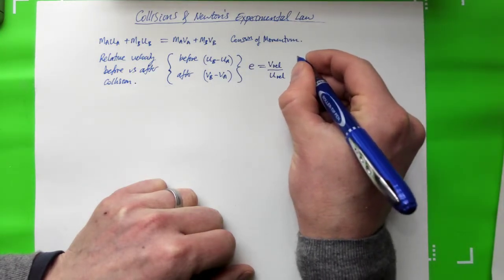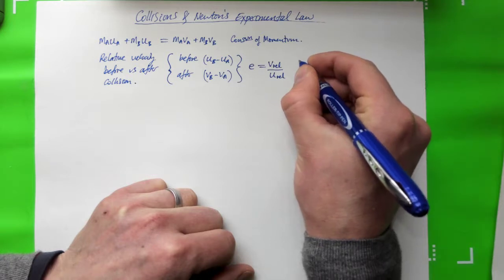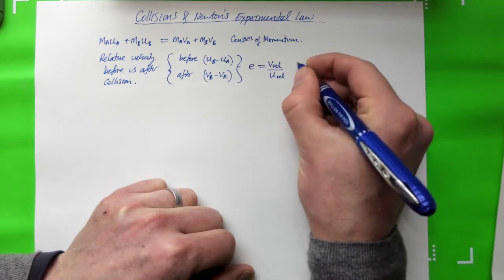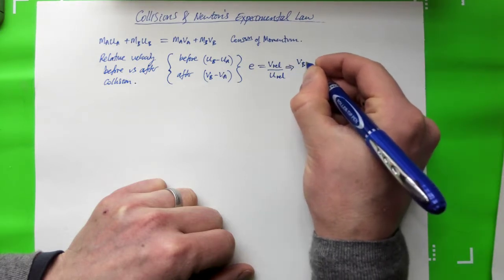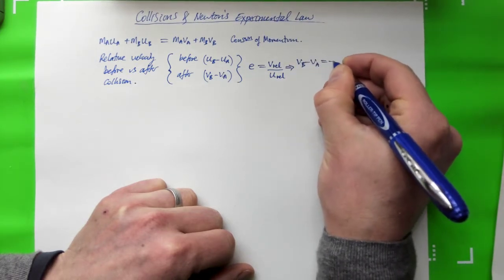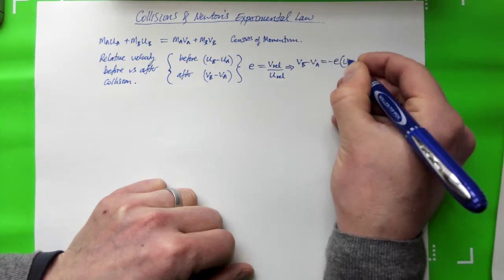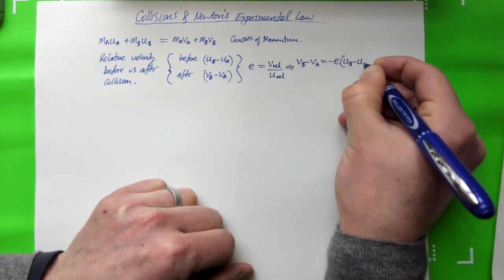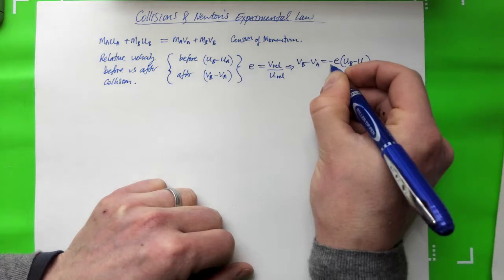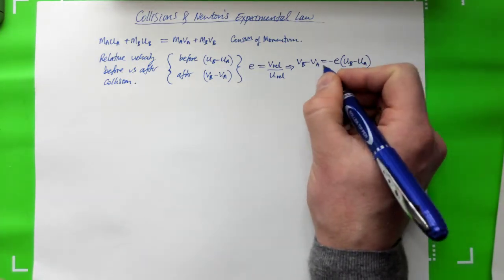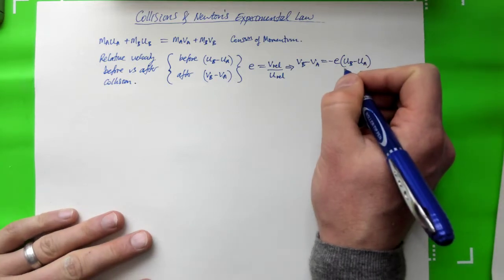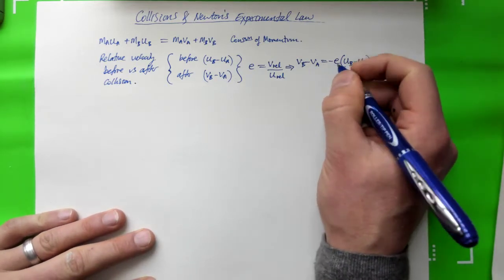So here it is. Let's write it up here. Therefore, VB minus VA equals minus E times UB minus UA. Why the minus sign? The minus sign is because typically the direction of the relative velocity changes between the before and the after. So when we go through some examples, you'll see why the minus sign is necessary.